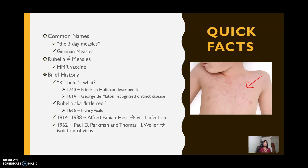This rash is characteristic of the illness. In 1914, Alfred Fabian Hess was the first one to identify that the infection was caused by a virus. This was later confirmed in 1938. And in 1962, both Paul D. Parkman and Thomas H. Weller were the first to isolate the virus for further study.